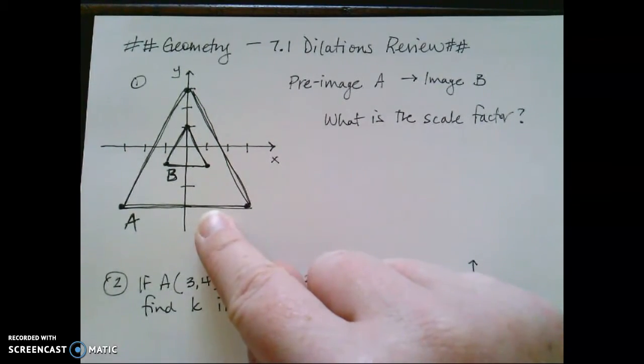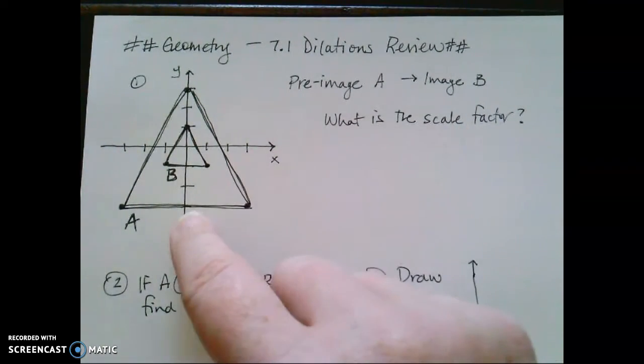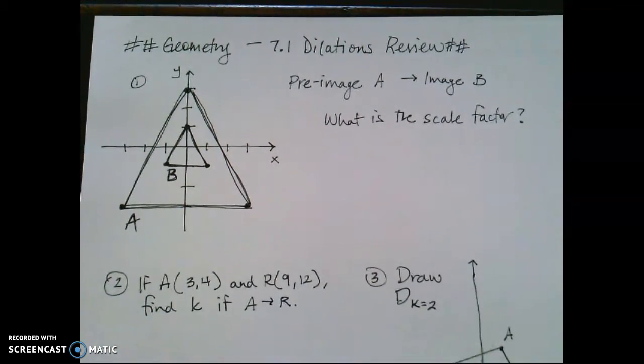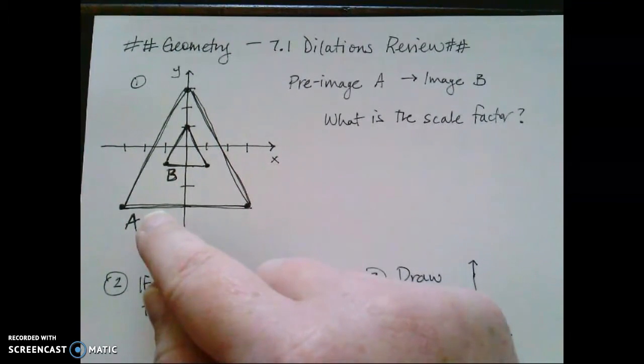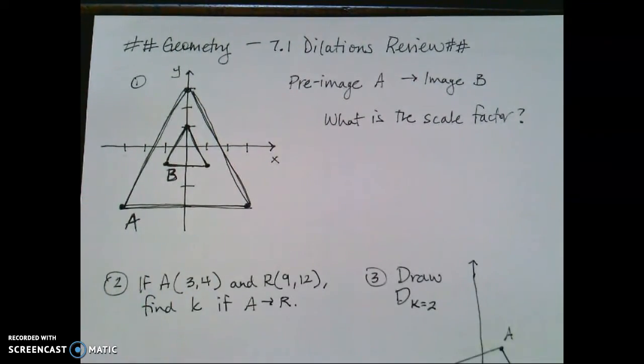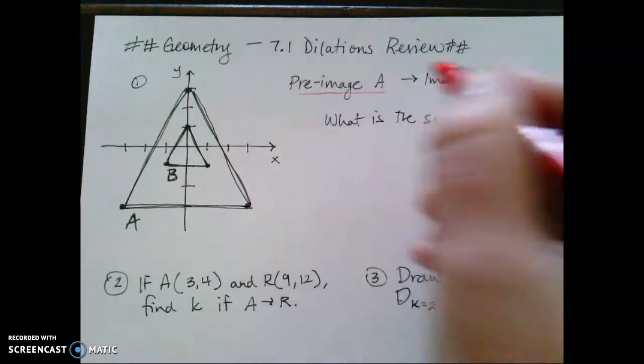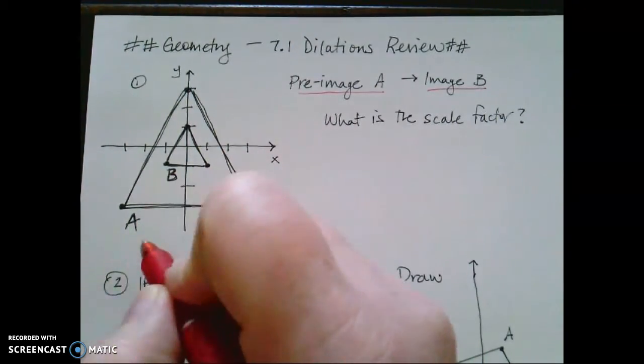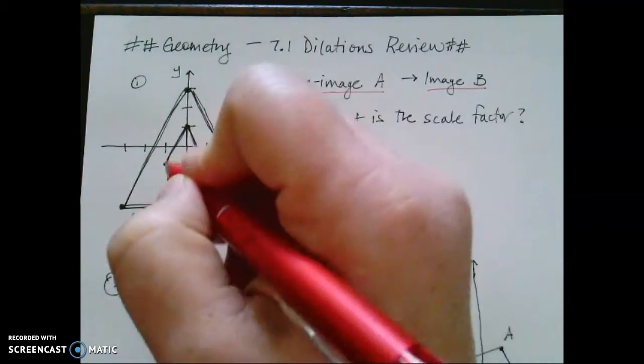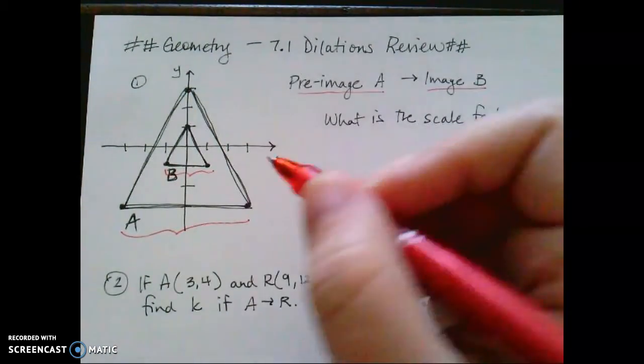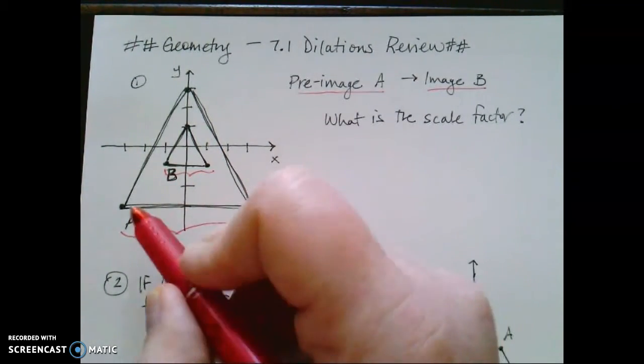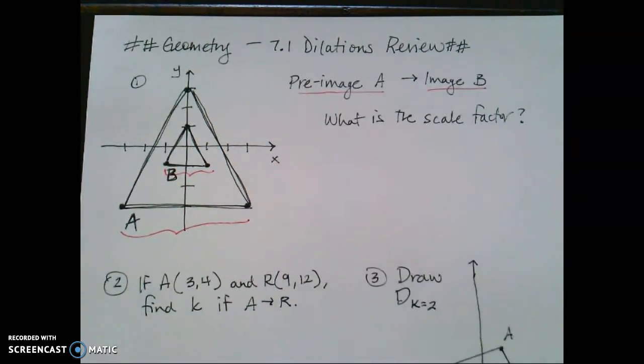When we're asked to find in this first problem, what's the scale factor? What do we have to multiply the length of one side of a triangle to get the length of a second side of a triangle? And remember the order in which we're gonna dilate matters. So please notice we're told figure A is the pre-image, figure B is the image. So we need to go from this side here to this side there. Now I chose these because they're horizontal.